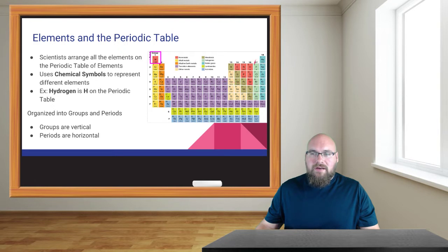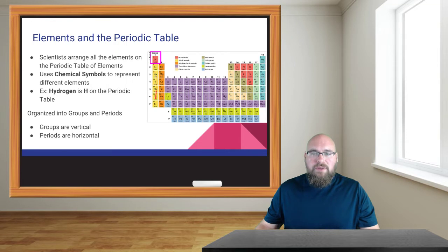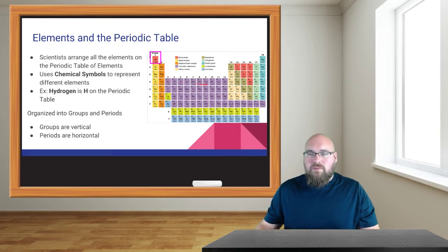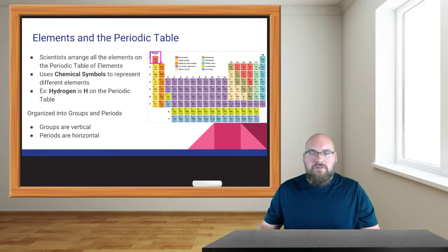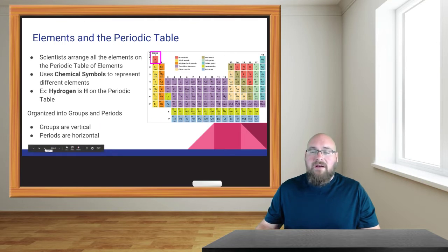The periodic table has groups, which are vertical columns going up and down, and periods, which are horizontal rows. Period one has hydrogen all the way across to helium, then period two is the next row, and so on. Each period and group tells us something about the elements that appear in those rows or columns.